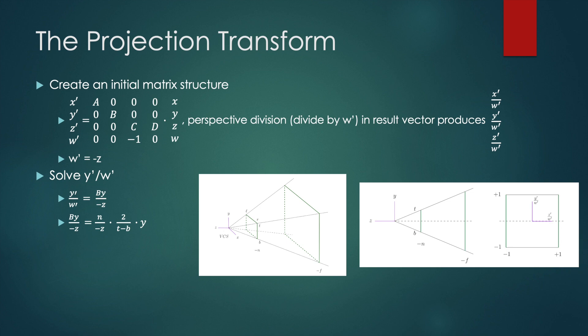But we aren't done there because we need to normalize the viewable range of b to t into the normalized device coordinates of minus one to one. So we have a second scaling term of two over t minus b to produce this normalization. And we can construct b as a sort of product of these two operations. One being finding the intercept with the near clipping plane and then two being normalizing the near clipping plane into the range of minus one to one. And so the result is b equals 2n over t minus b.